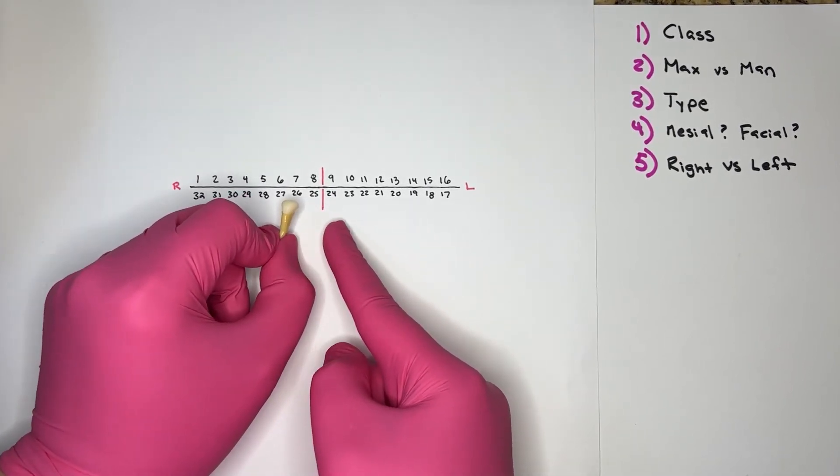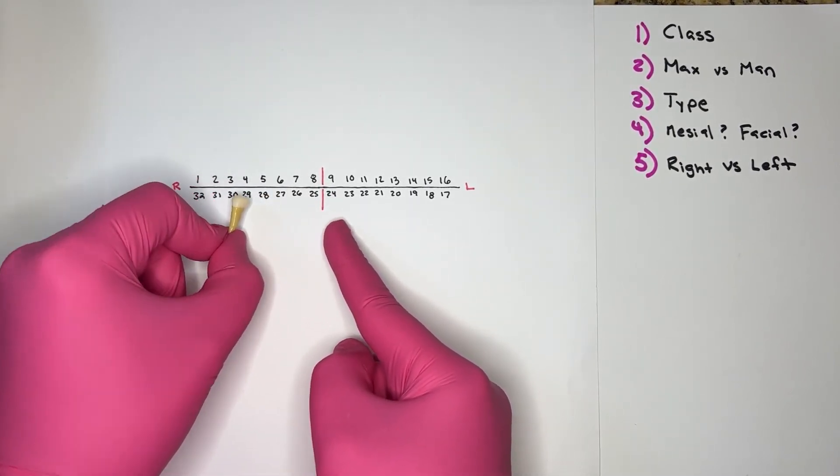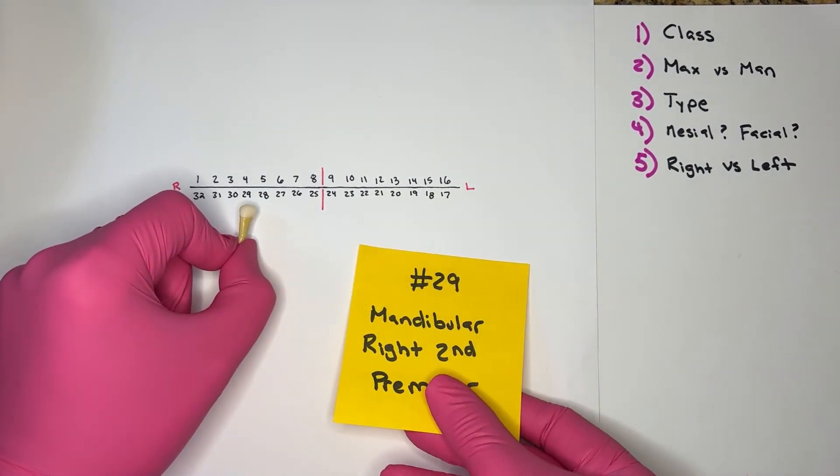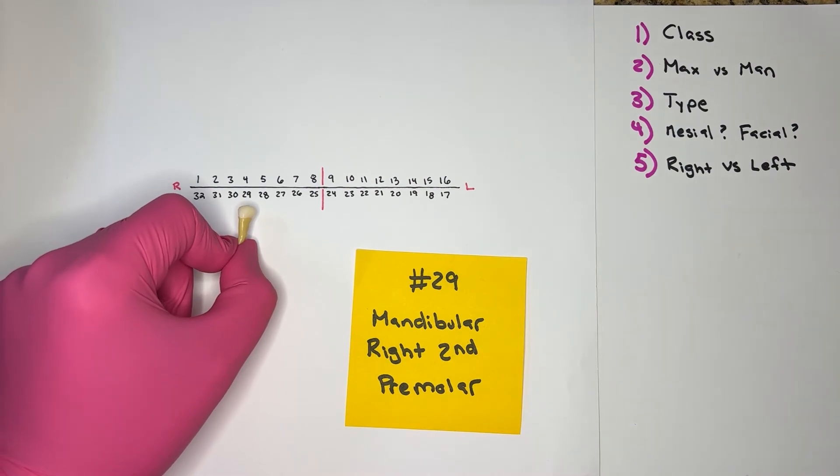I end up on the right side. If I put to the position of the mandibular second premolar, I'm specifically at tooth number 29, the mandibular right second premolar.